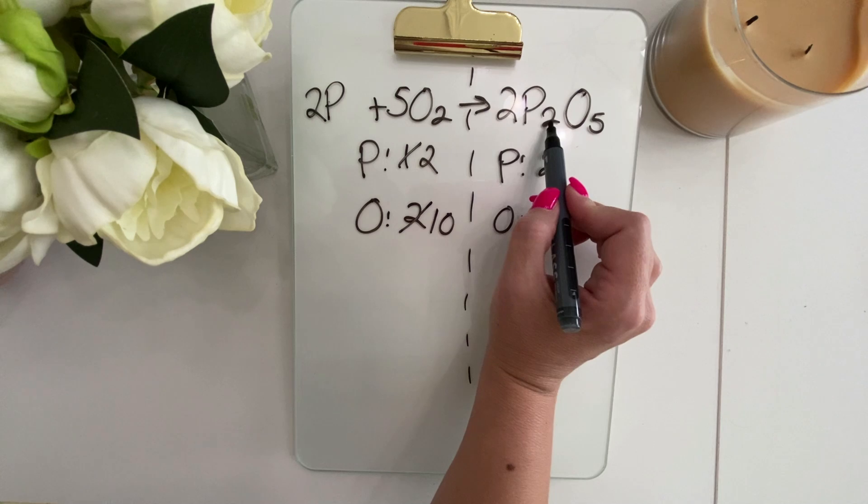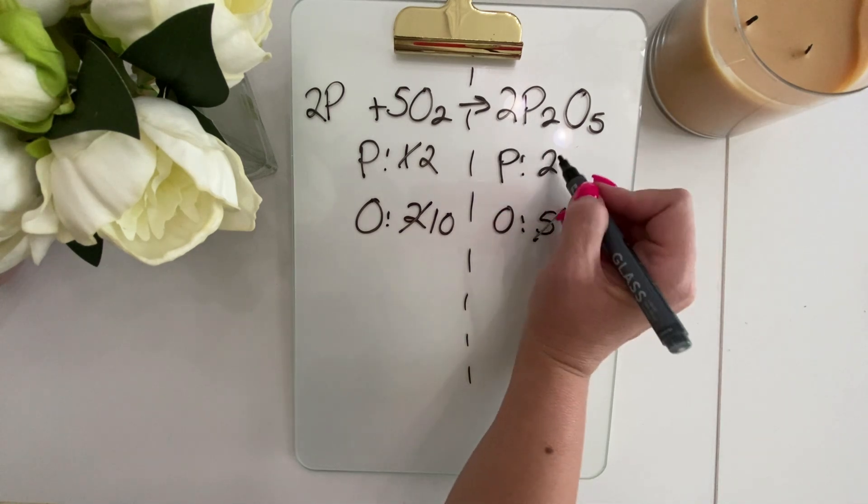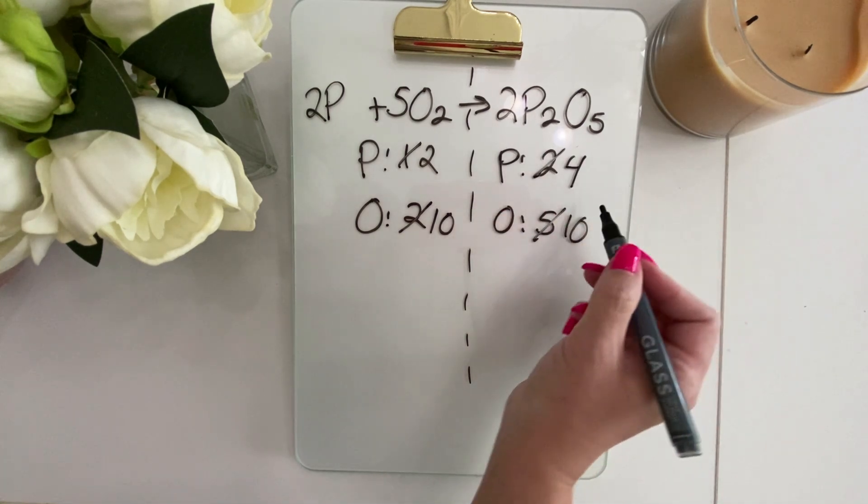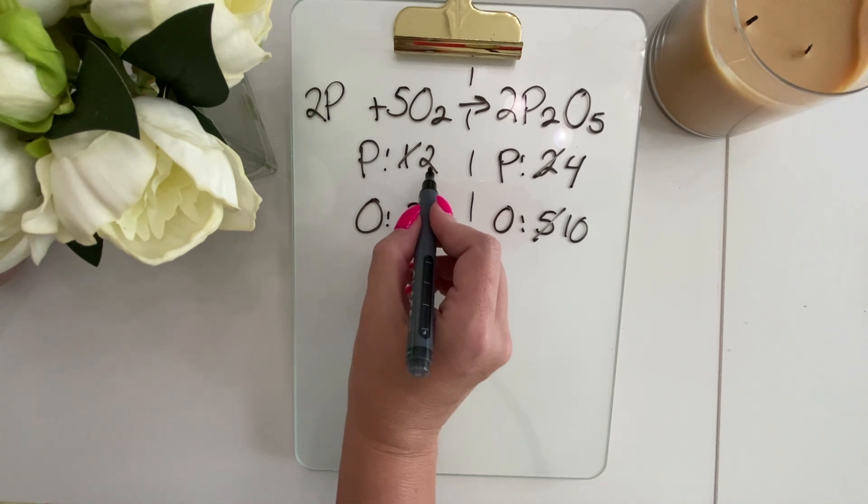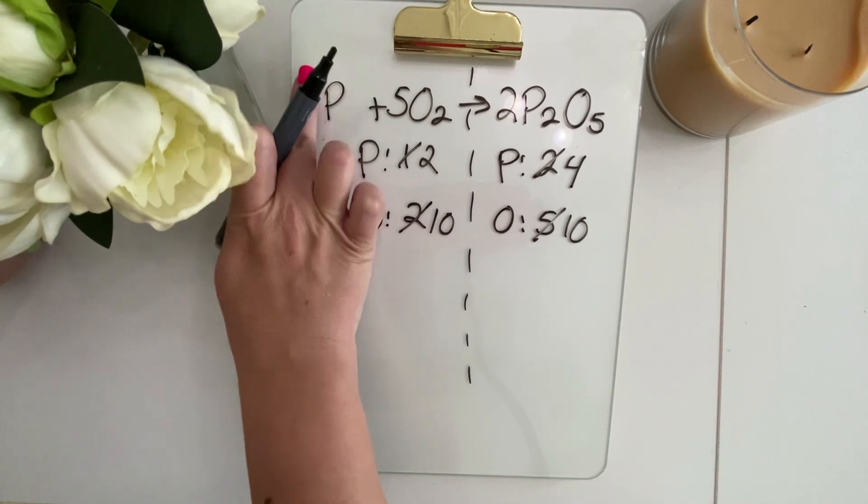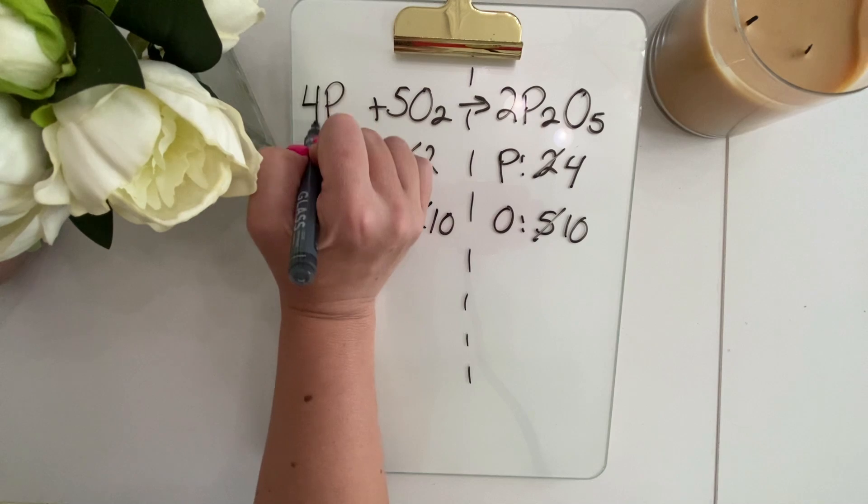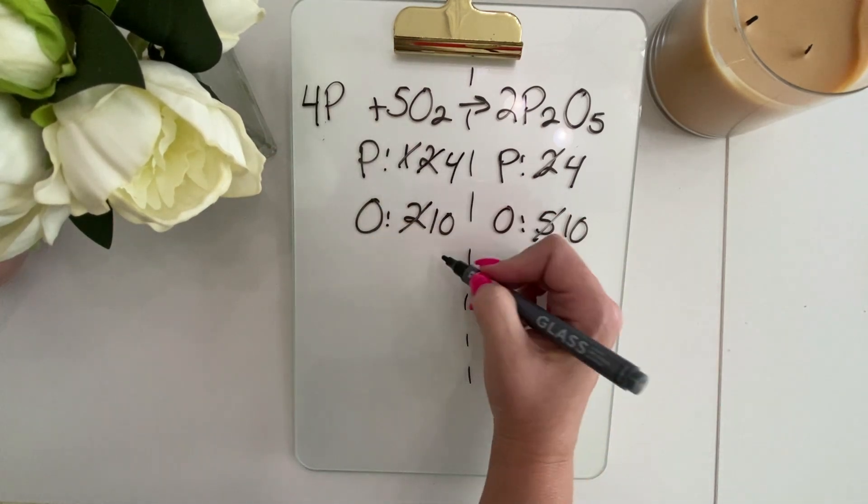However, it does change how many phosphorus we have. So now we have four phosphorus on this side. An easy fix to change this one to four is to remove the two and put a four coefficient instead. And now you are balanced.